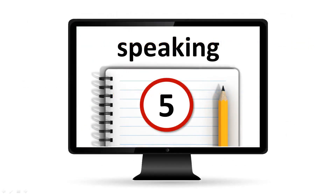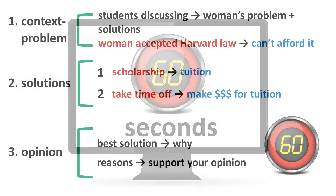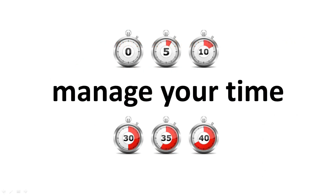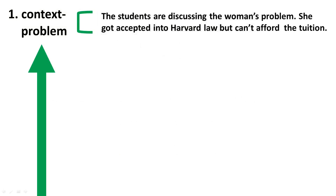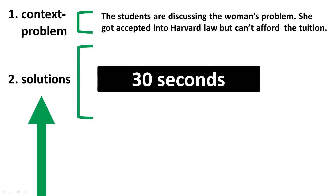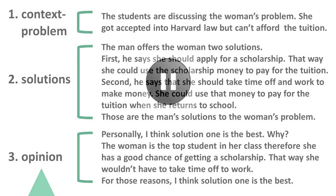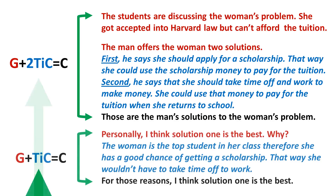Next is Step 5: speaking. You will have 60 seconds to follow your note map and deliver your response. It might seem impossible to squeeze all this information into 60 seconds — it is not. The key is to manage your time. For the context and problem summary, speak for 10 seconds. For the solutions summary, speak for 30 seconds. For your opinion, speak for 20 seconds. As you can see, G3TICC is used twice in this response, for mapping out the objective summary and the subjective argument.